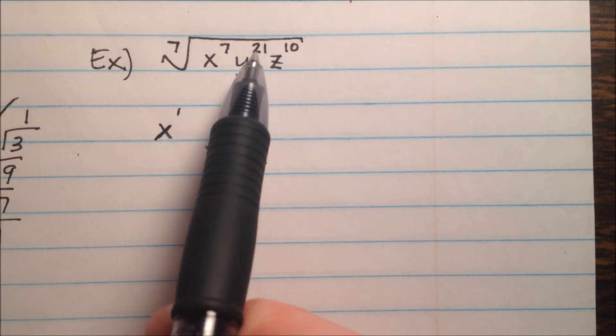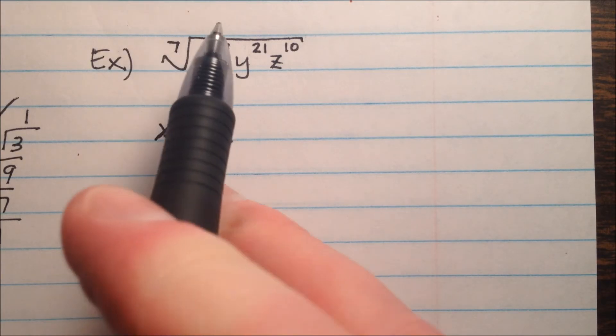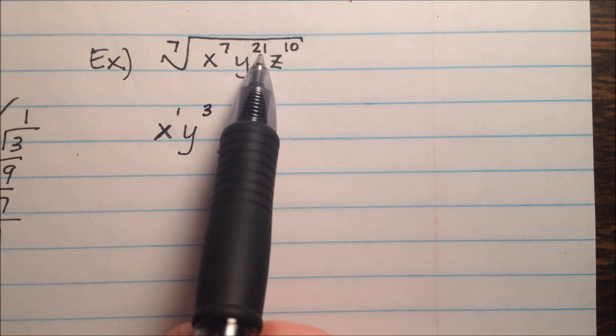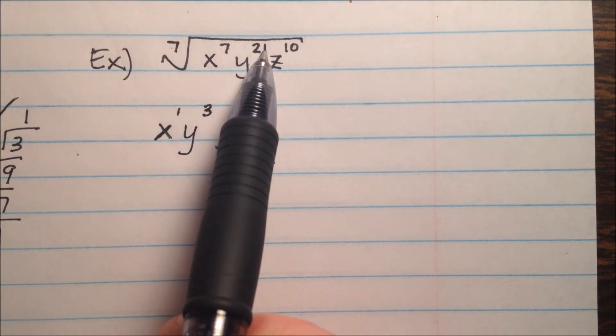So on the y, we have 21 divided by 7, and that'll give me 3, so y cubed. And there was no remainder, because 7 divides 21 evenly.